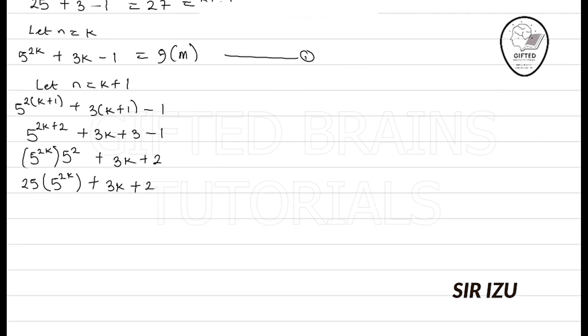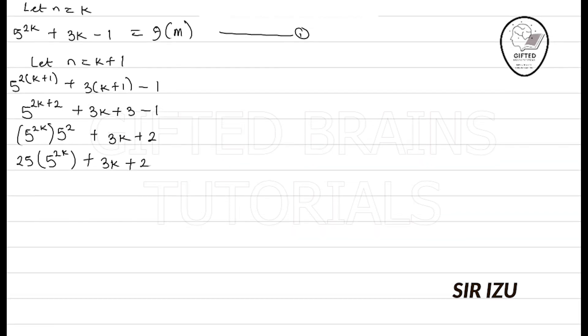So, but I will say from that equation I call equation 1. From equation 1, we have 5^(2k) + 3k - 1 being a multiple of 9. I can make 5^(2k), so we have a formula there. 5^(2k) will actually give me the 9m itself minus 3k plus 1.